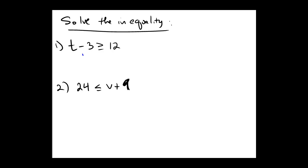t minus 3 bigger than or equal to 12. So we will add 3 to both sides of the inequality to yield t bigger than or equal to 15. So that's it for solving the inequality if that was all that was required.